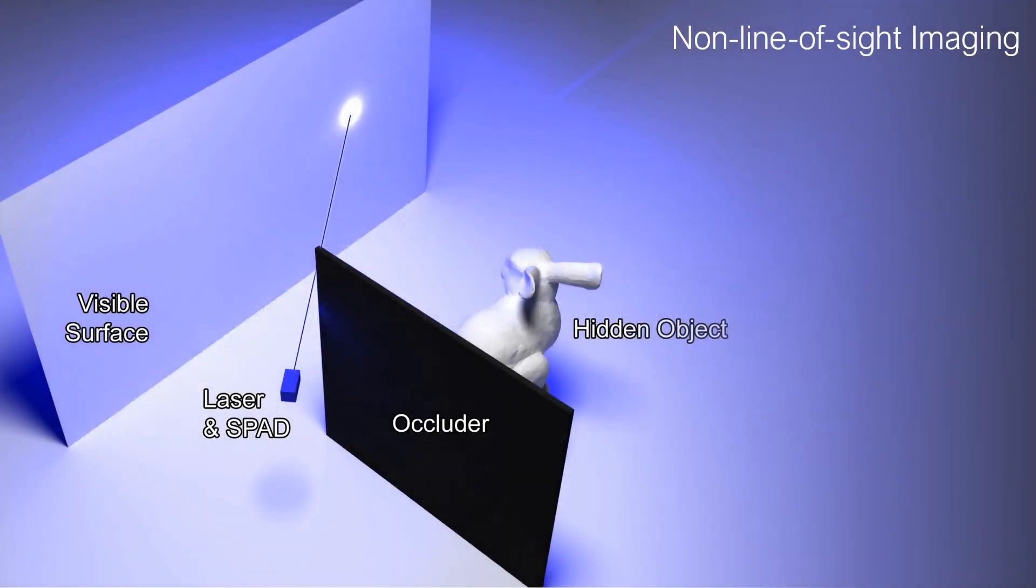Non-line-of-sight imaging aims at recovering objects hidden from the camera's direct line of sight. The camera records the indirect reflections of hidden objects on a diffuse direct reflector, here the wall on the left.